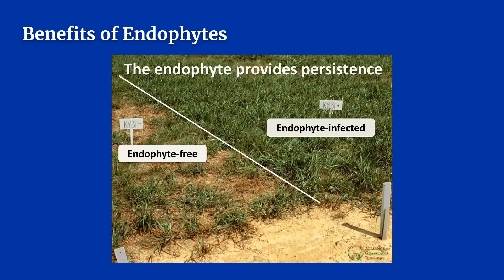Although the Kentucky 31 endophyte produces toxic alkaloids such as ergovaline, the endophyte also produces alkaloids that are beneficial to the plant. They provide a level of insect repellent, which is one reason why Kentucky 31 is such a good turf grass. The Kentucky 31 endophyte also helps the plant to be persistent in stressful environments such as tough grazing and heavy traffic. Endophytes and the alkaloids they produce are the reason infected tall fescue is so persistent in pastures.